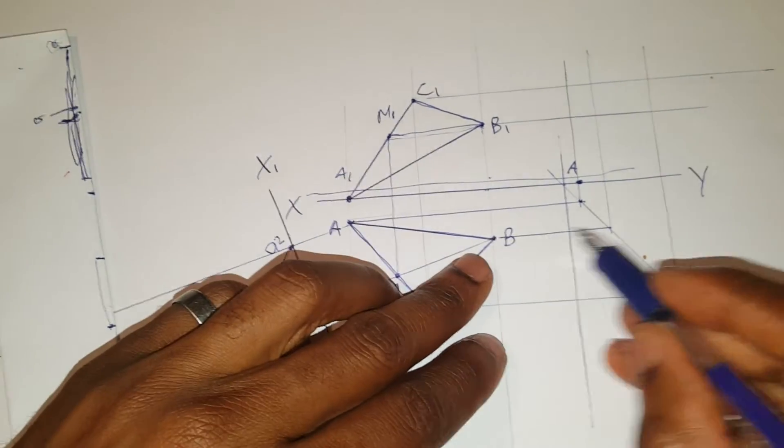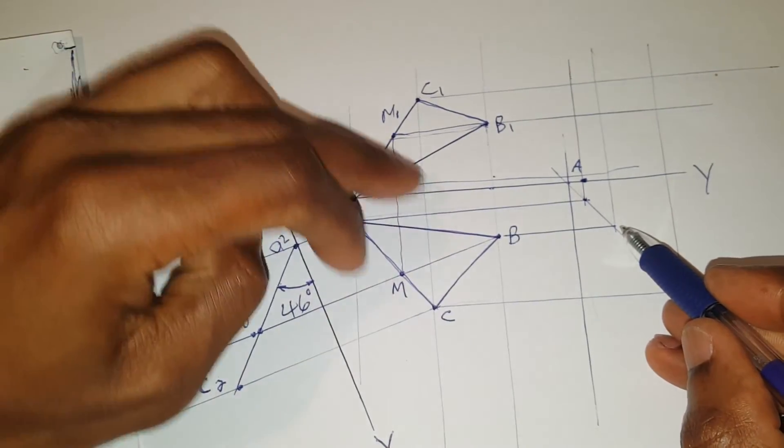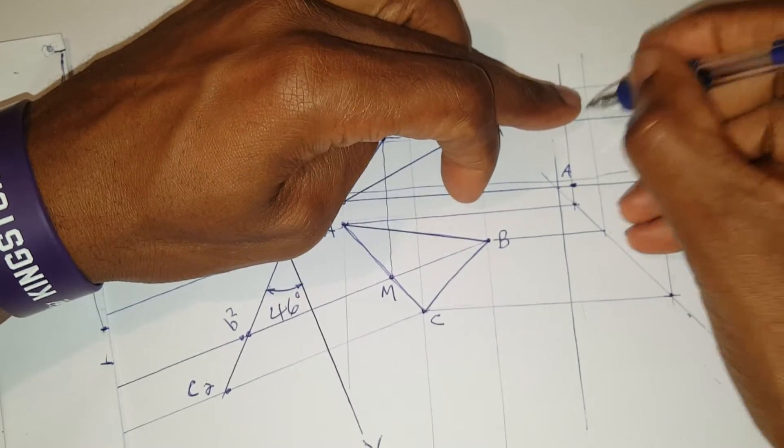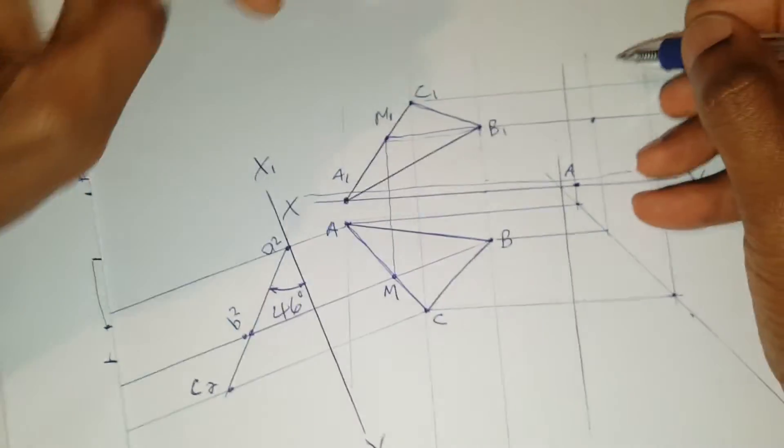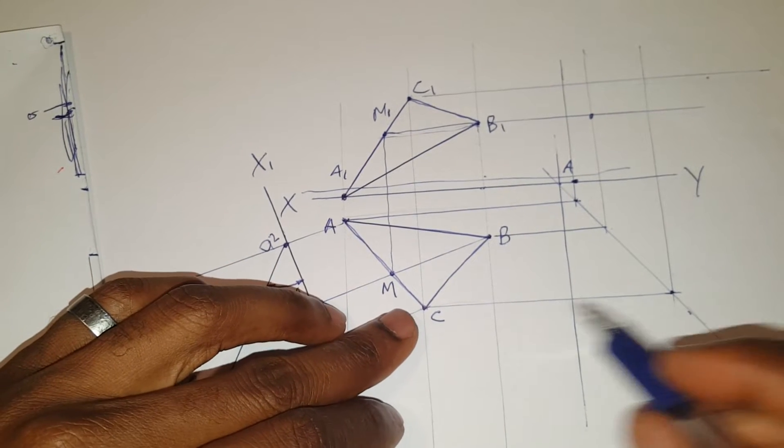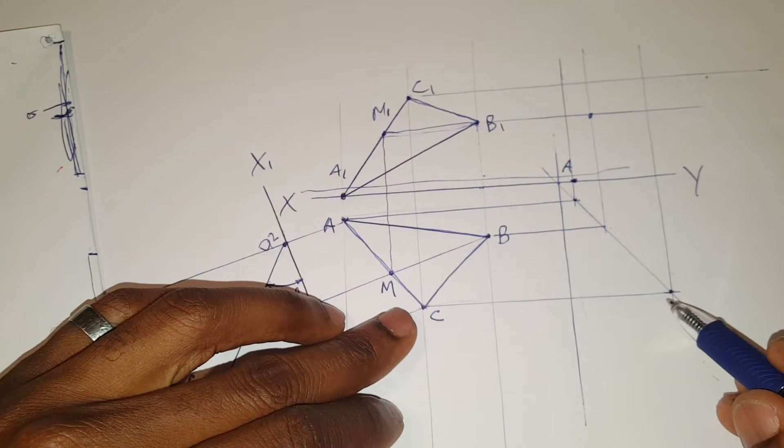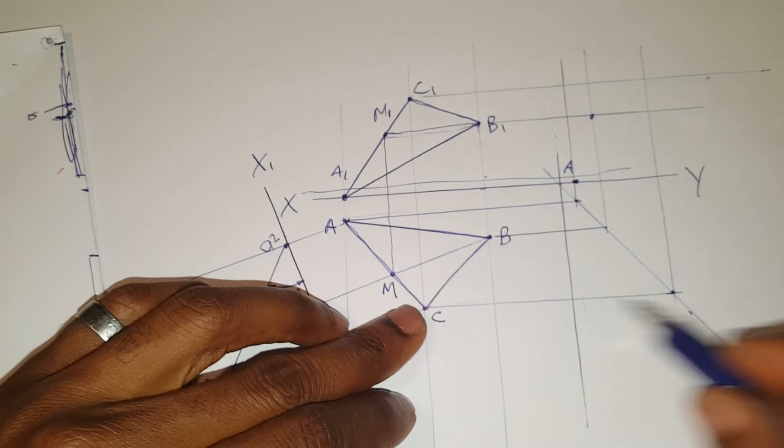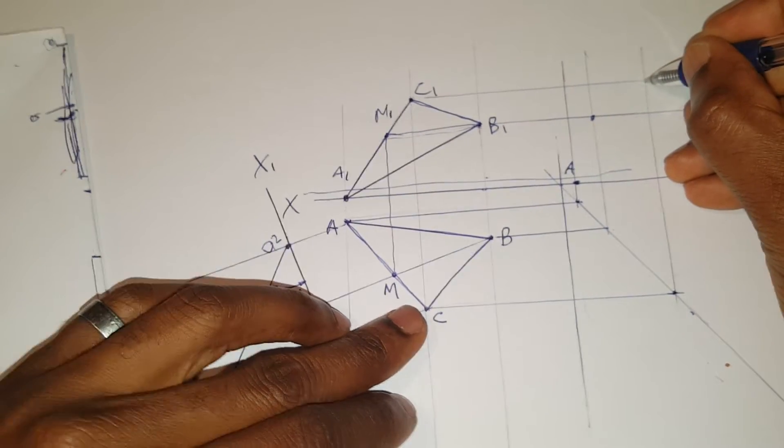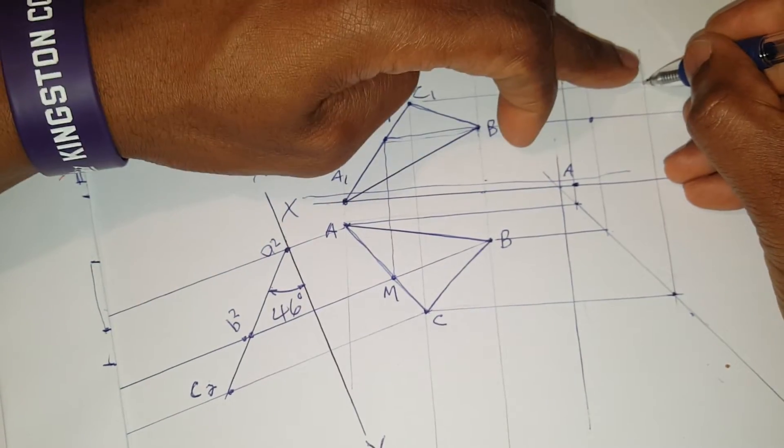B comes across and meets with B here. C comes across and meets with C here.